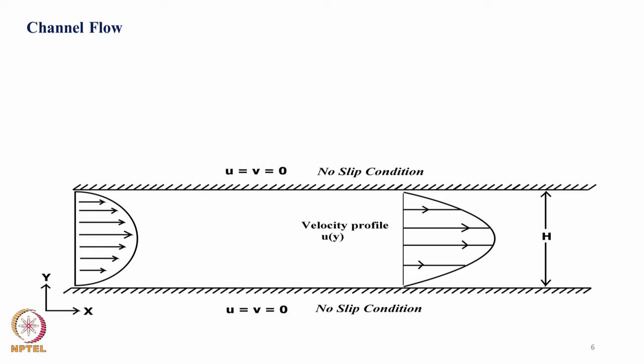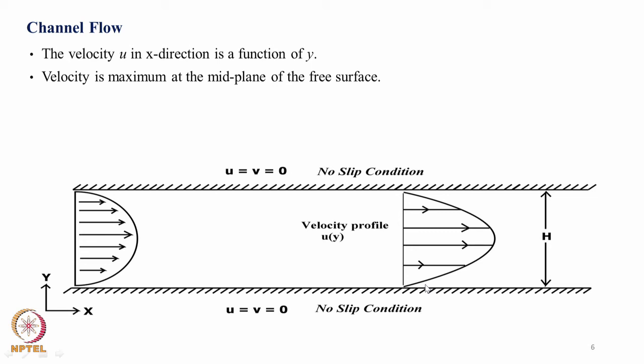The third problem that we can think of is flow in a conduit. So flow through a circular cross section pipe as I am showing here. You can give at the inlet either a parabolic velocity profile as it is described here, or you can prescribe a uniform velocity at the inlet. If you are giving a uniform velocity at the inlet, it will take a long channel for the flow to develop and become a fully developed velocity profile as it is shown here. If you are giving already a parabolic profile which is very close to the fully developed condition, then you need only a smaller length and flow will develop. Again, boundary conditions are given: u = v = 0 on both the side walls. So velocity u in the x direction is a function of y and velocity is maximum at the mid plane of the free surface.